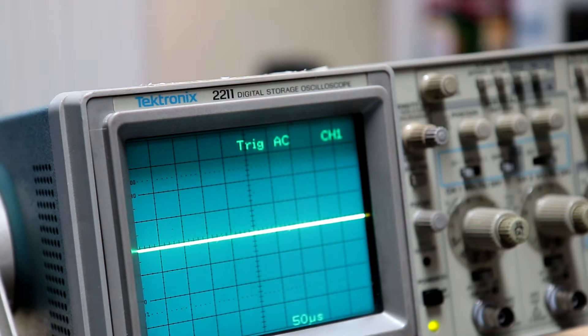It's got not much in the way of sample memory, but in analog mode it's got a bandwidth of DC to 50 megahertz and it's a twin channel scope. So let's check it out.